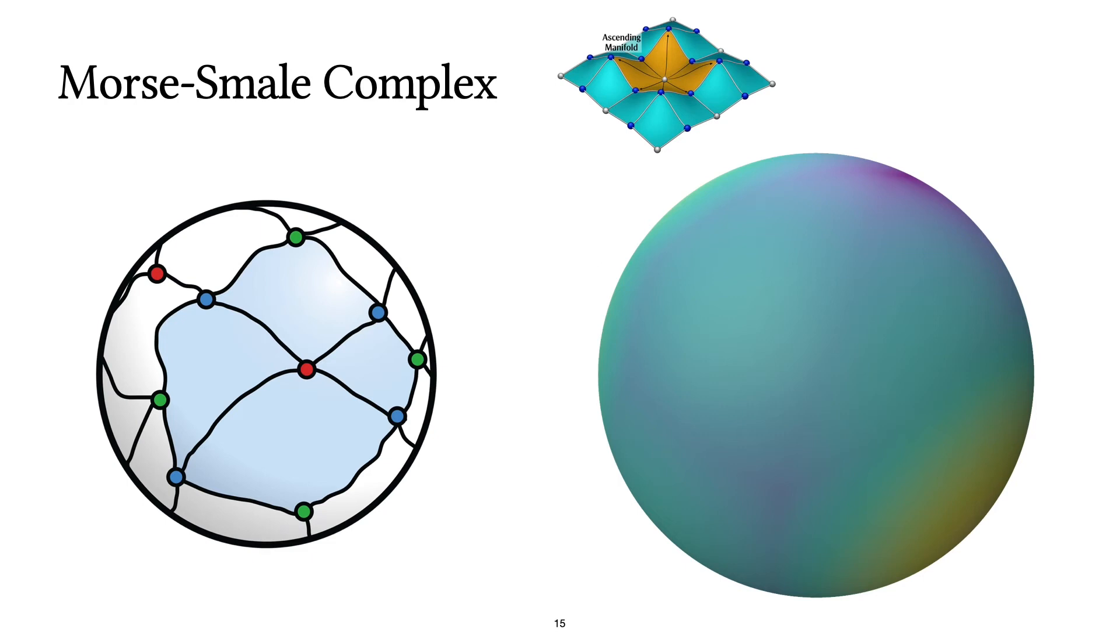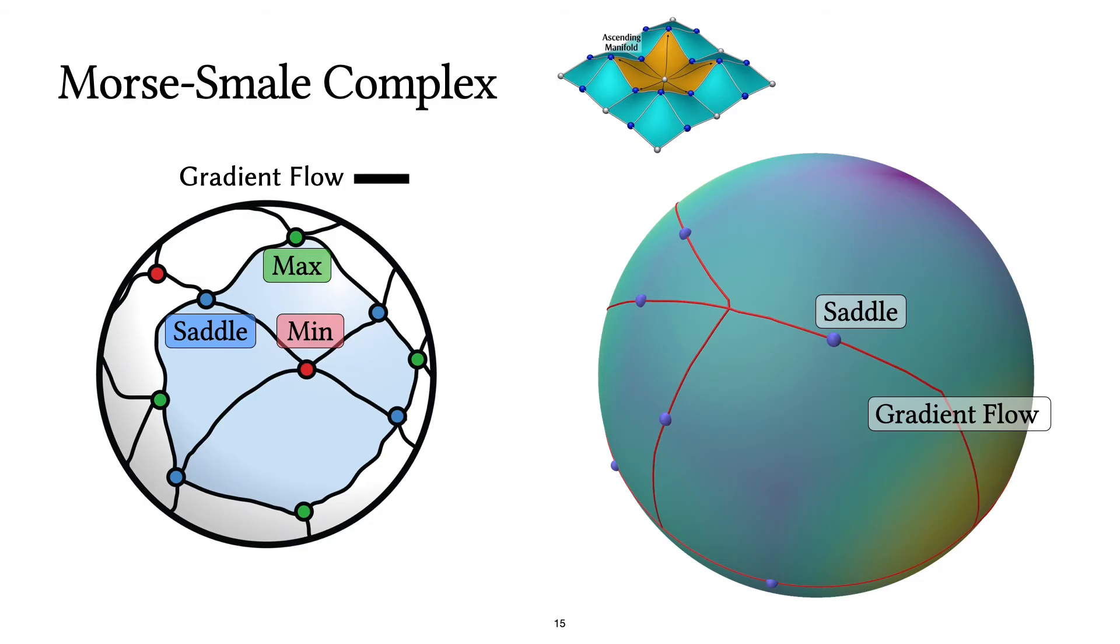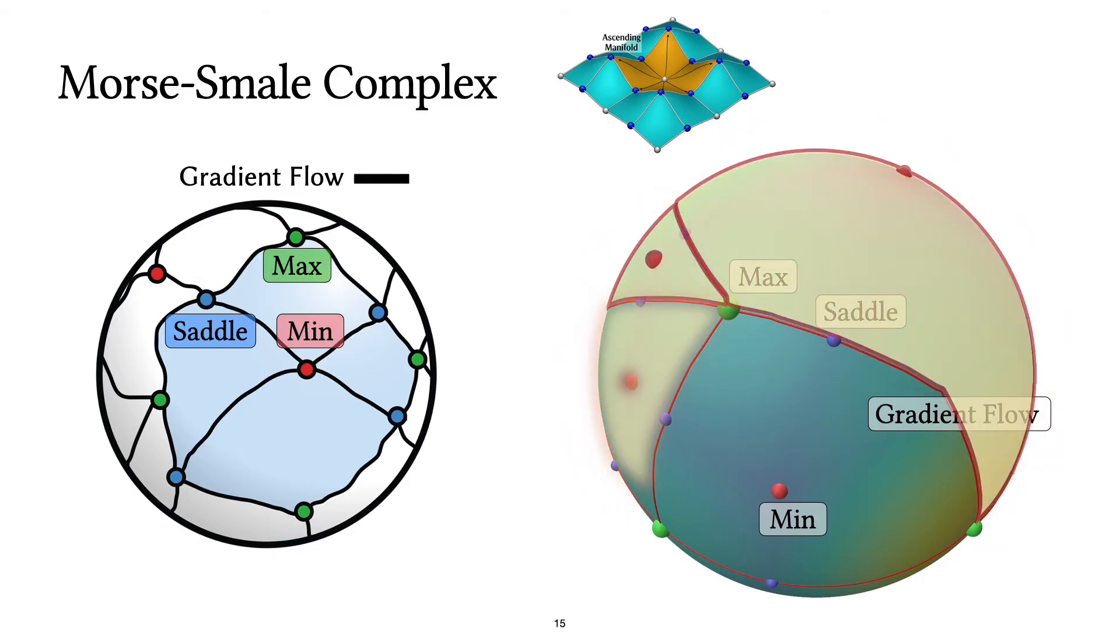These ascending manifolds are a part of a more general structure that is defined for any function on any domain. This is called the Morse-Smale complex, and it defines how critical points of a function connect with each other by following the gradient flow. To find this structure, first we find the saddle points of the function, then we follow the path of the gradient until we get to local maxima. And that gives us exactly the ascending manifolds corresponding to each and every local minimum.